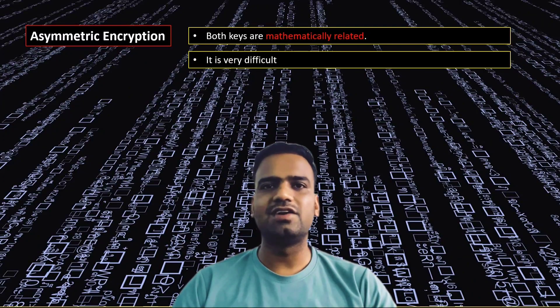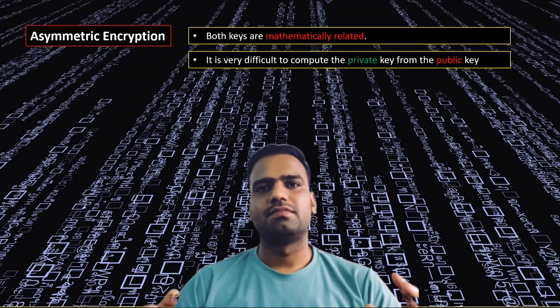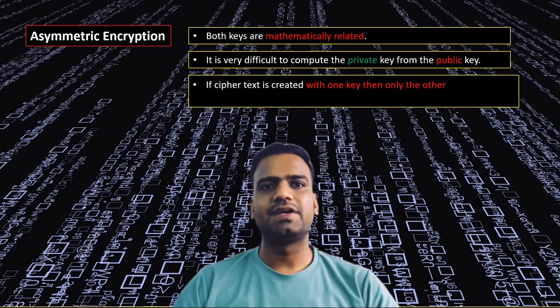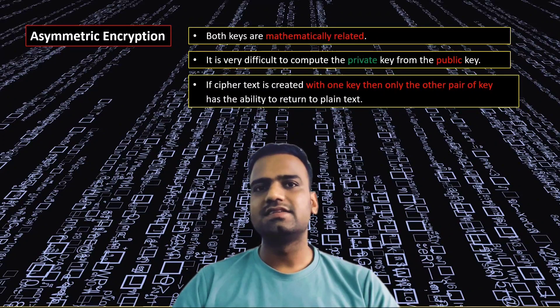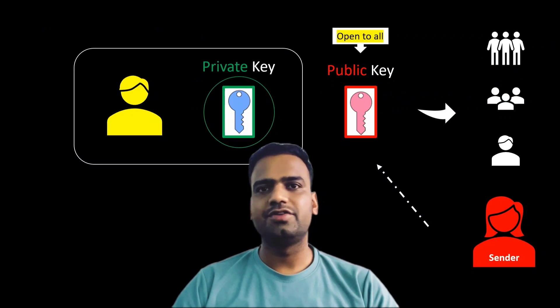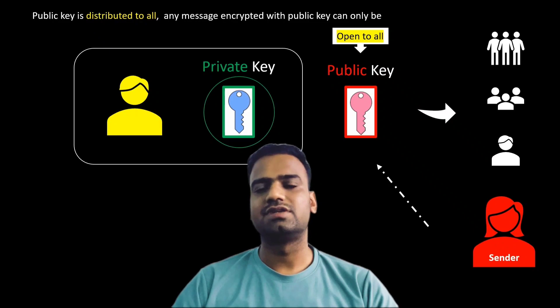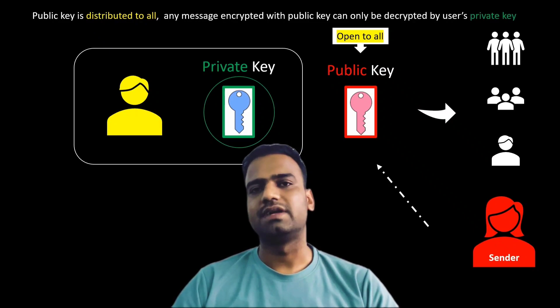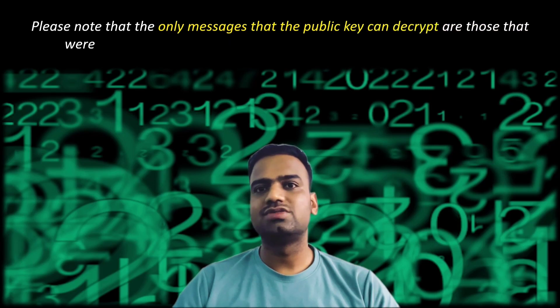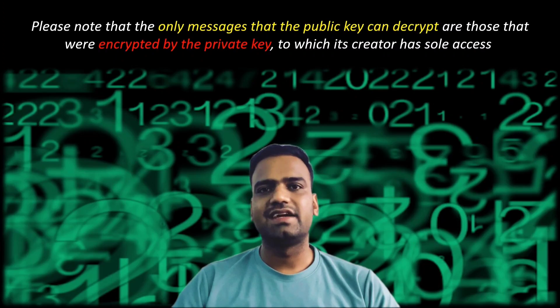Both keys are mathematically related, and it is very difficult to compute the private key from the public key. If ciphertext is created with one key, only the paired key has the ability to return it to plain text. As a result, the public key can be freely distributed and used to encrypt any message that should only be readable by the person whose public key is used, while that person uses their private key to decrypt the message.